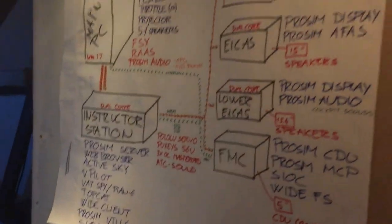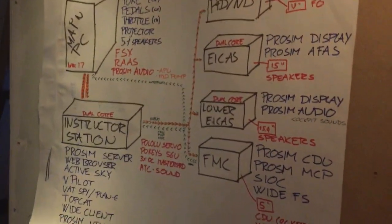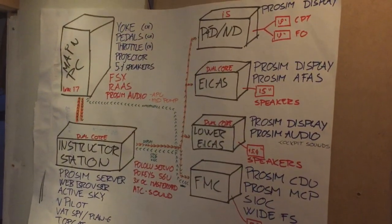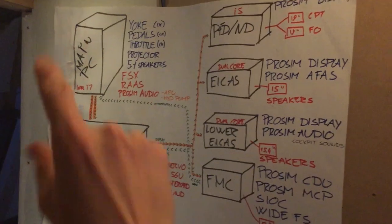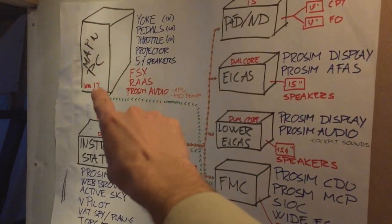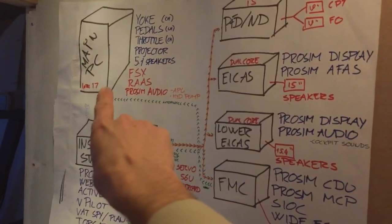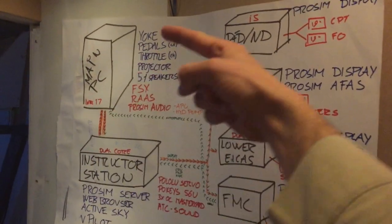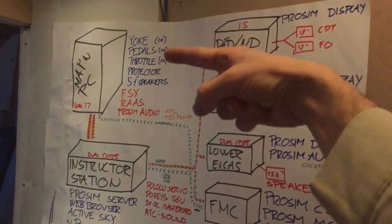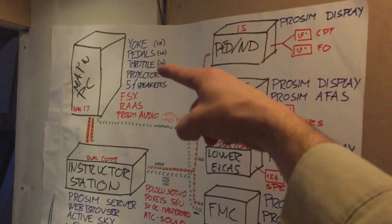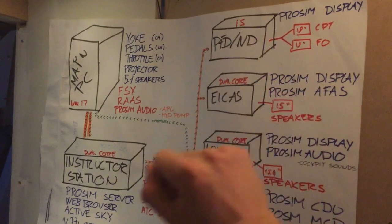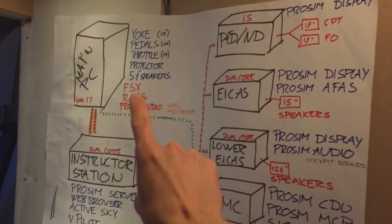I made this drawing of the setup — I'd like to run through it so you can see what is connected to what. The main PC up there is an Intel i7. It has the yoke, the pedals, and the throttle from CH Products, USB connected, a projector, and a set of 5.1 speakers.